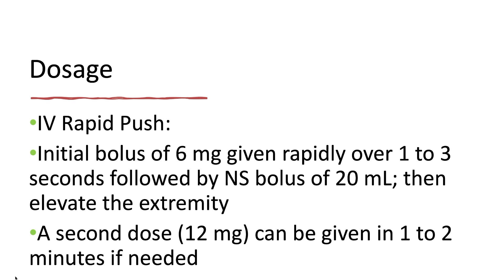Adenosine is given as a rapid push of 6 mg over 1 to 3 seconds, followed by a normal saline flush. A second dose of 12 mg can be given in 1 to 2 minutes if needed. Don't forget that the half-life of adenosine is very short — about 10 seconds — so we need to be very quick in administering it for it to be effective. Ensure to record a rhythm strip before, during, and after administration of adenosine.